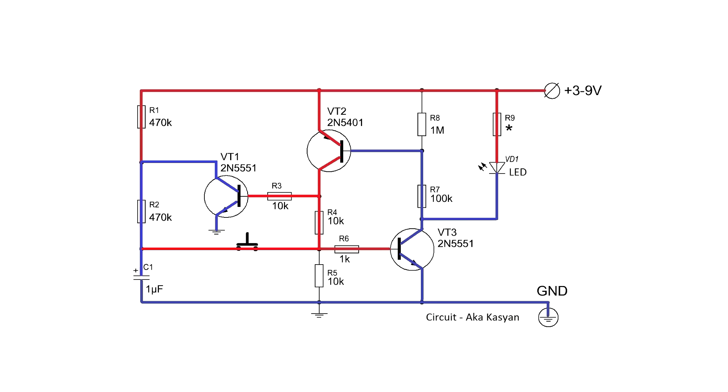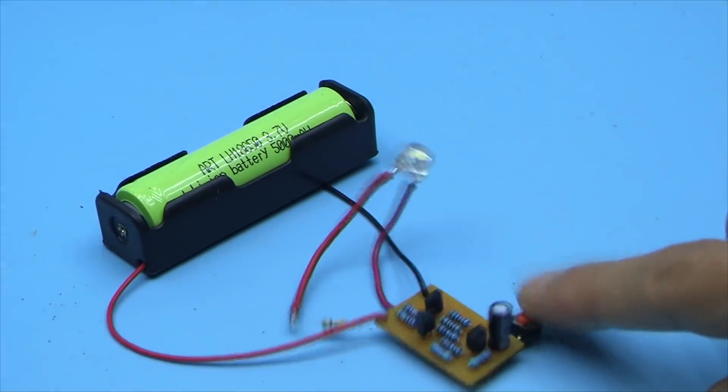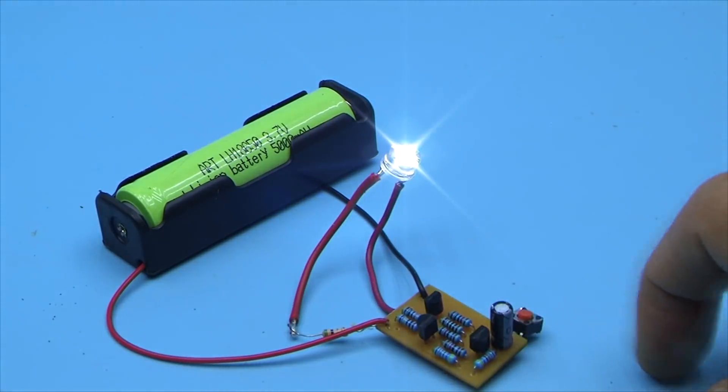When the button is pressed again, the voltage from the divider will charge the capacitor. On the base of the transistor, the voltage is about 0.7V, which is enough to unlock it. But due to the charge of the capacitor, the voltage on the base drops slightly and the transistor closes, and other transistors also become closed.